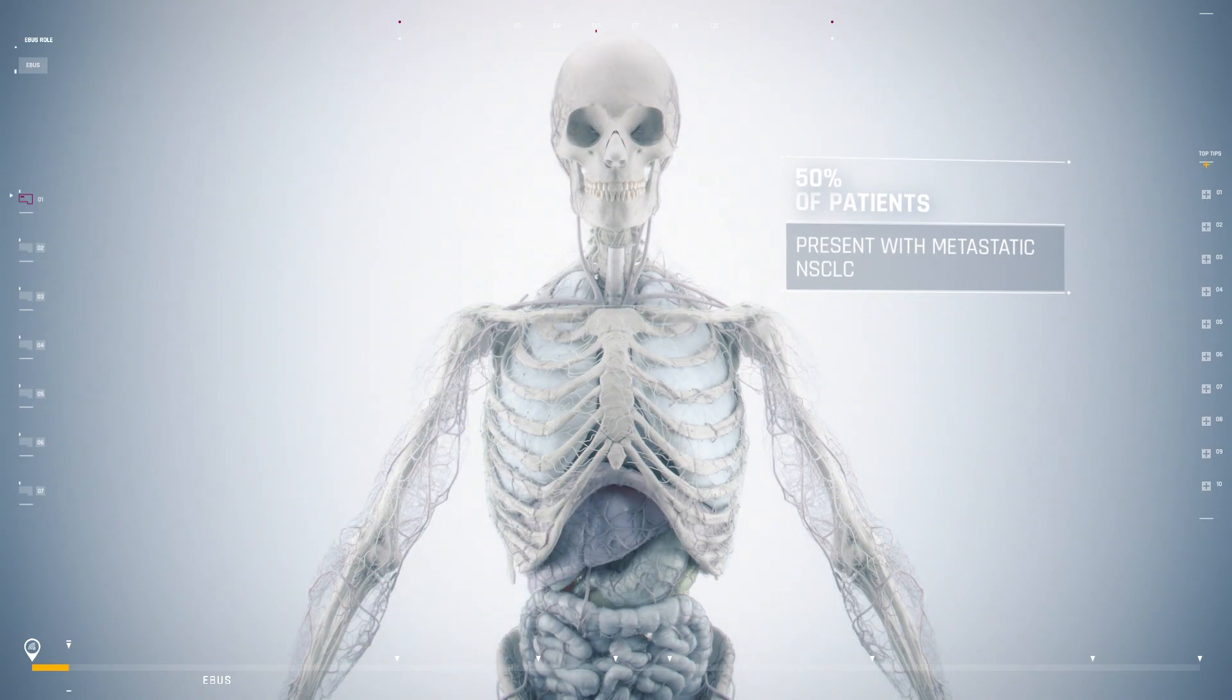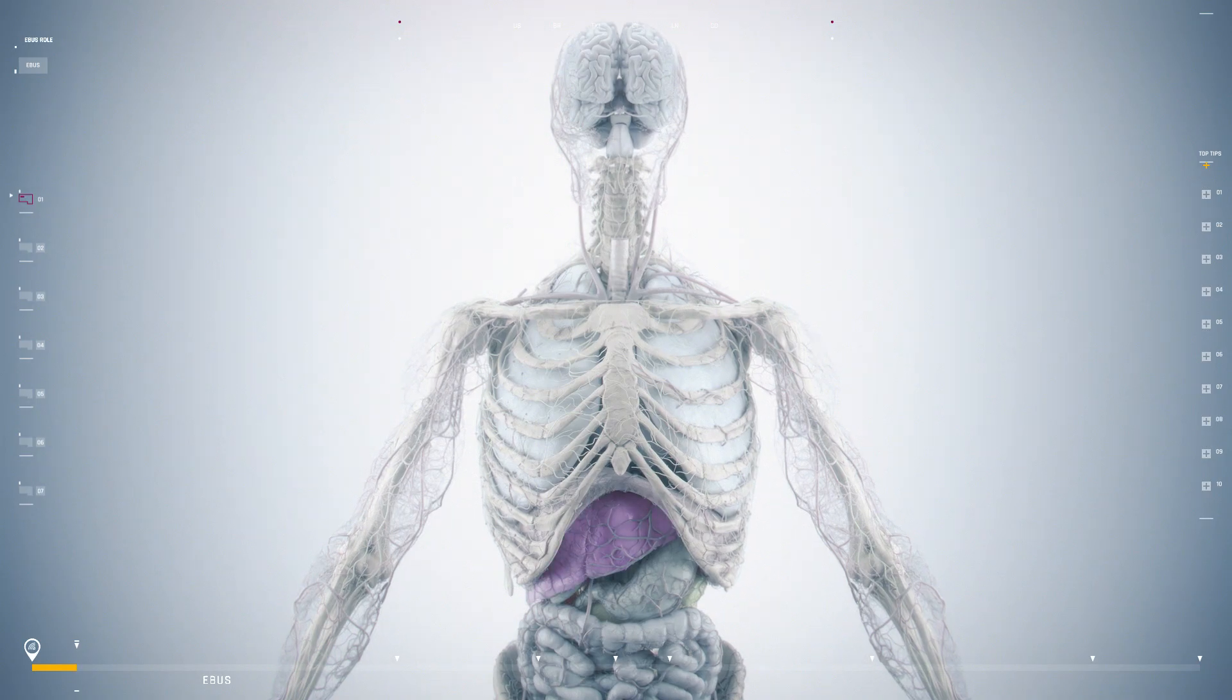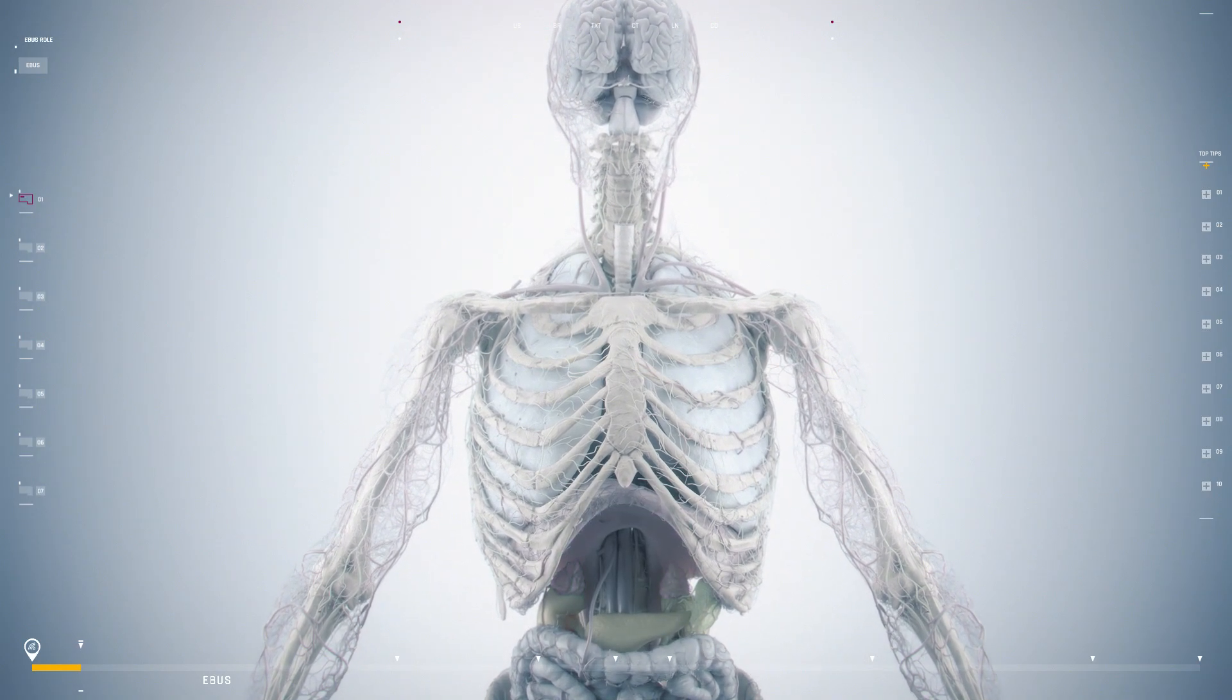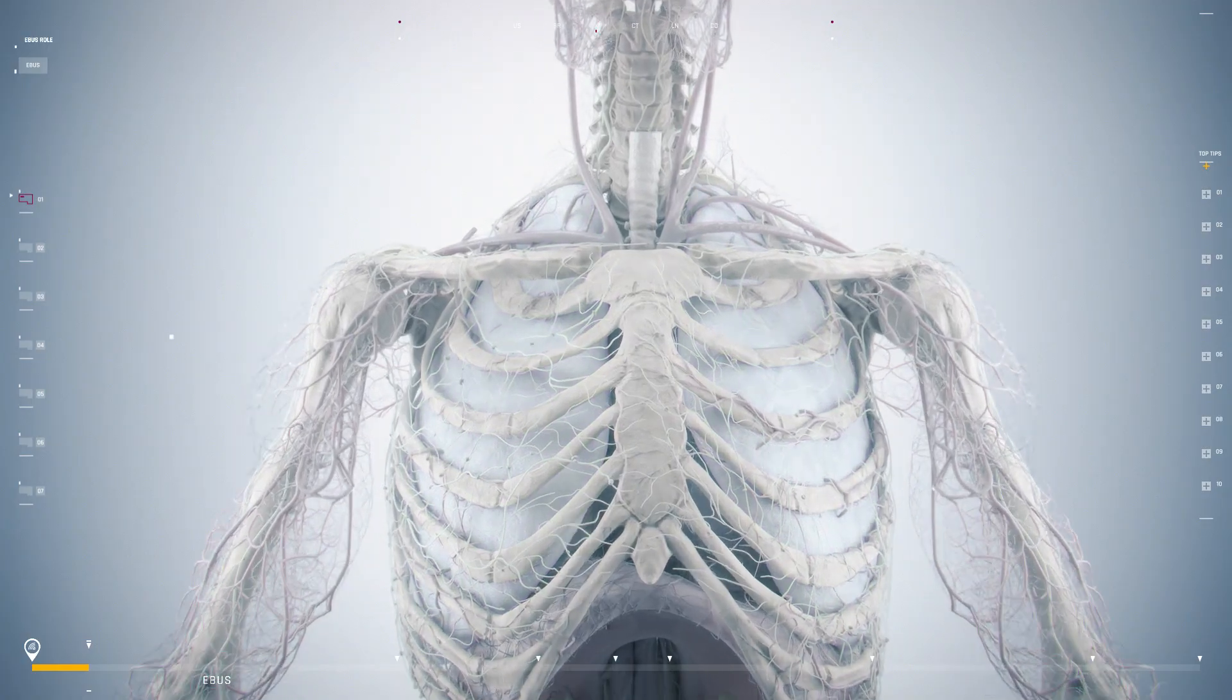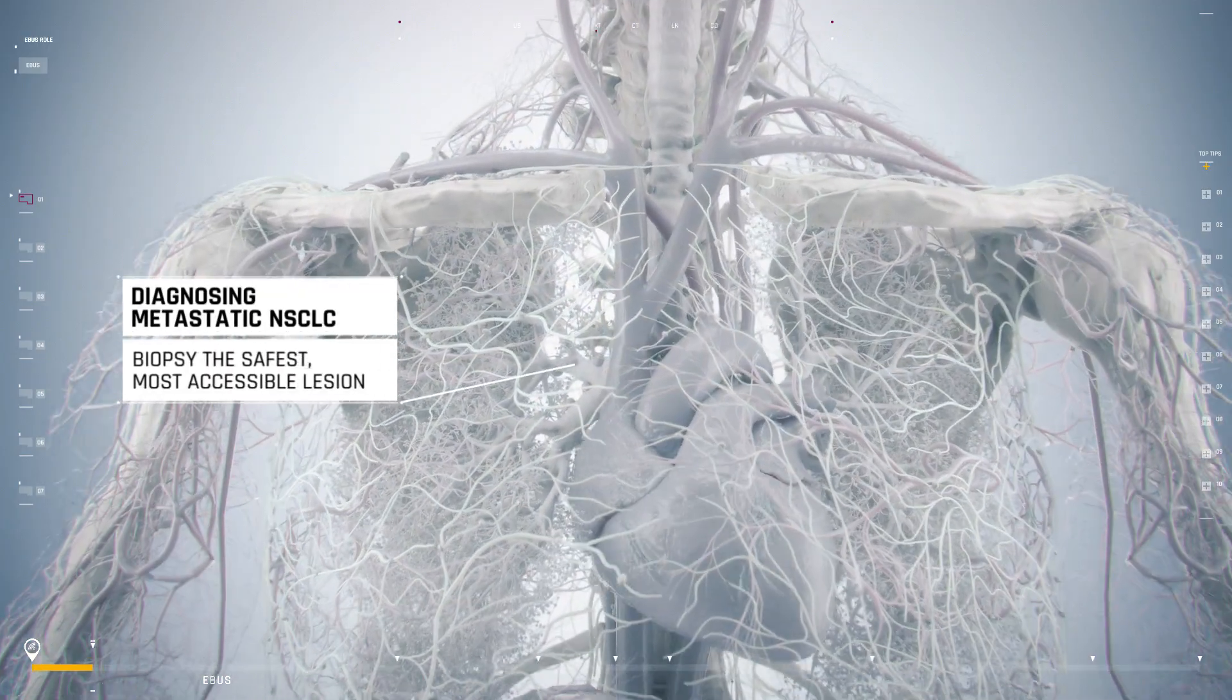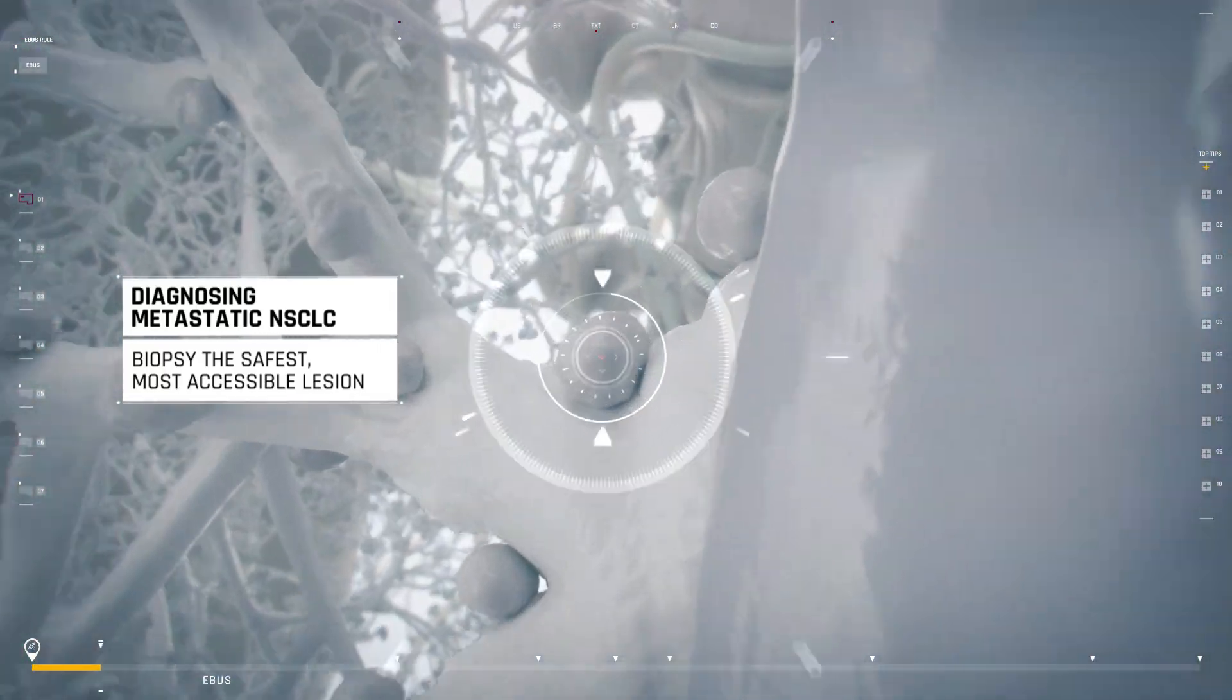Metastases usually occur in the bones, brain, liver, or adrenal glands. For patients with metastatic lung cancer, a tissue sample should be taken from the safest, most accessible lesion for the purpose of confirming a diagnosis, subtyping the lung cancer, as well as molecular profiling to determine eligibility for a specific therapy.